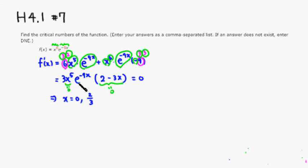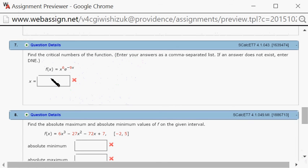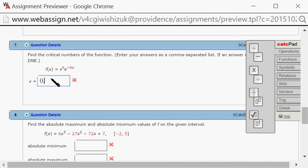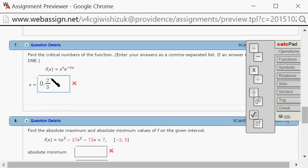But the derivative is defined everywhere, so we don't have the second kind of critical numbers, but we have 0 and 2 thirds, those are the critical numbers. Oops, maybe I should use - so here, critical numbers. All right, so let's type it in. All right, we got that 0 and that 2 thirds.